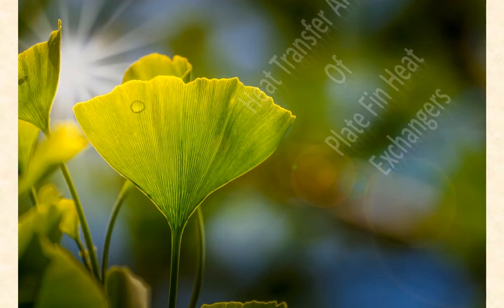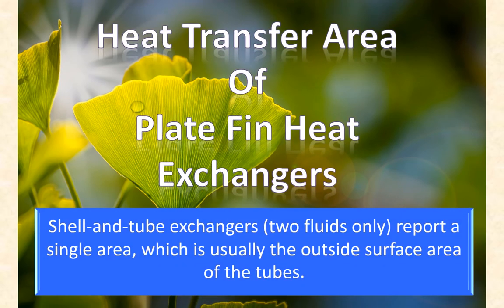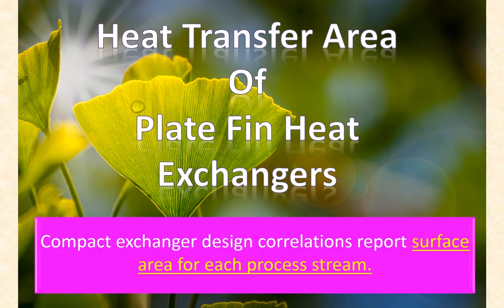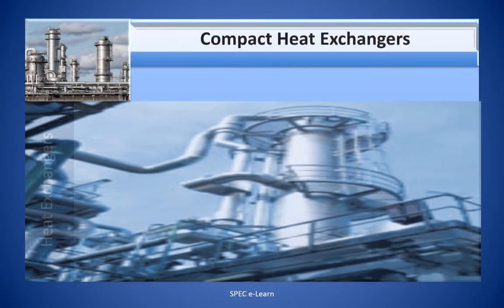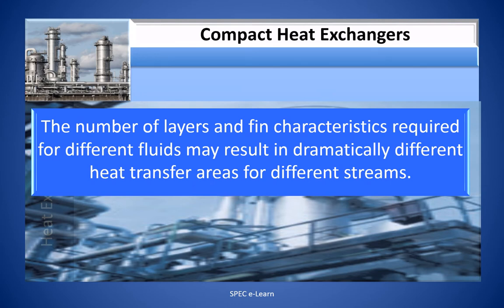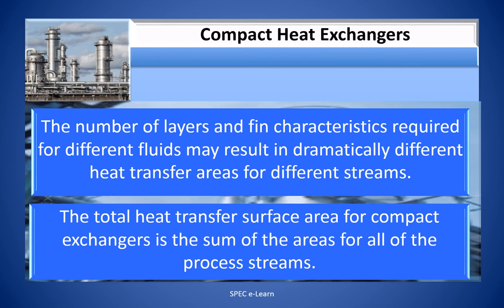Regarding heat transfer area reporting: a shell and tube heat exchanger with two fluids reports a single area, usually the outside surface area of the tubes. Compact exchanger design considerations report surface area for each process stream separately. The number of layers and fin characteristics required for different fluids may result in dramatically different heat transfer areas for different streams. The total heat transfer surface area for compact heat exchangers is the sum of the areas for all process streams.